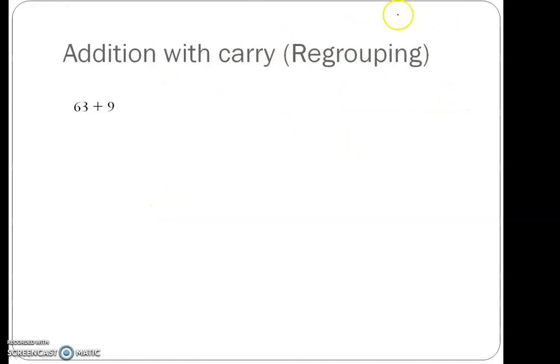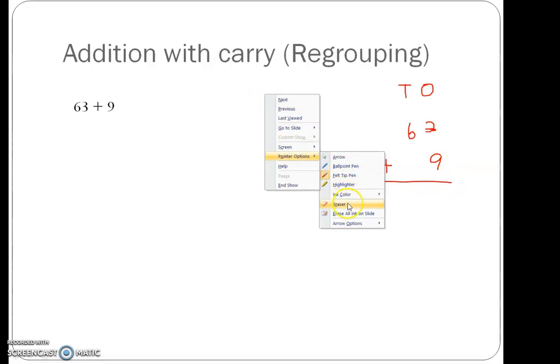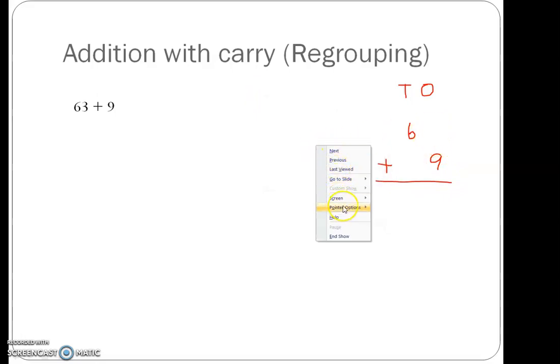63 plus 9. First, we will arrange them in place value chart. Tens and ones. 63 is 6 tens and 3 ones, and we have to add 9 to this. 63 plus 9. First we arrange them in a place value chart. Now we are going to add. We start with the ones place.